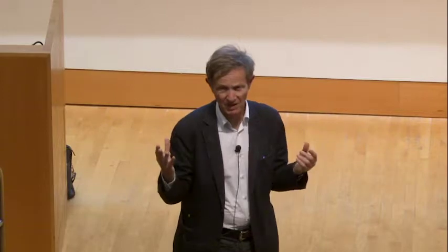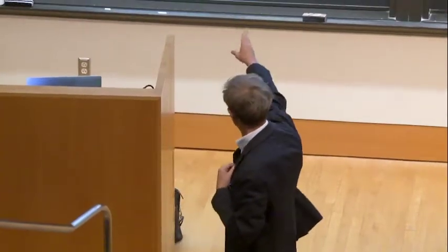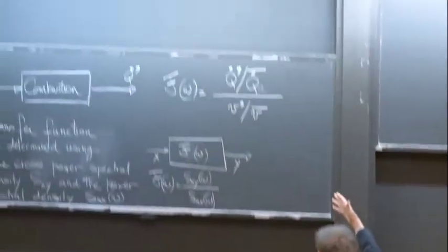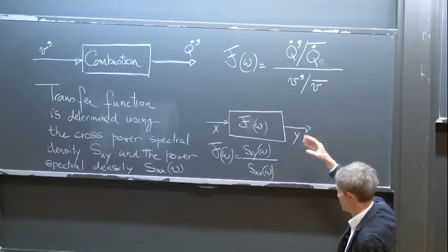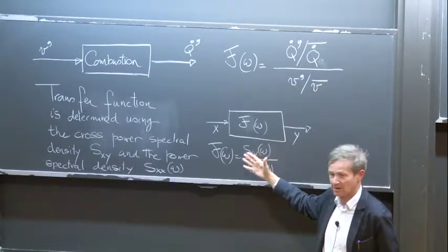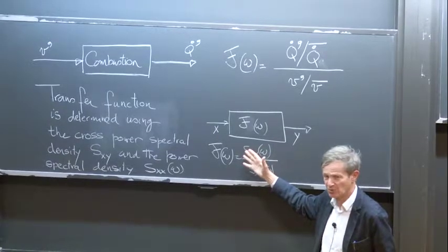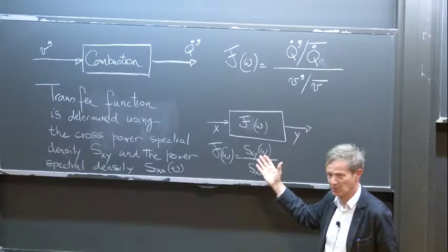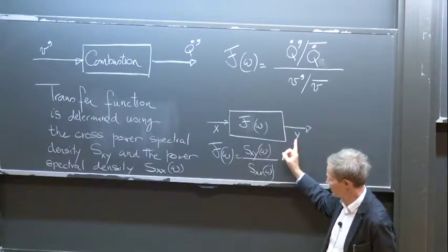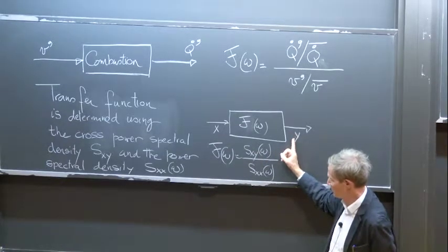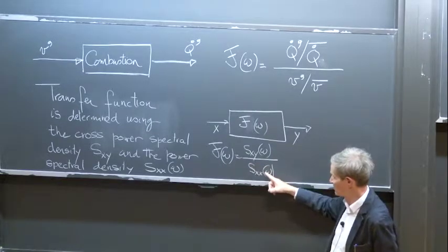The transfer function is obtained using these two quantities: on one side, the relative fluctuation in heat release, and on the other side, the relative fluctuation in velocity. This is the definition we've been using. And of course we have a transfer function also for the equivalence ratio fluctuation. In practice, the best technique to obtain this transfer function is to use a result from spectral analysis, which tells you that the transfer function is obtained by taking the cross-spectral density between input and output and dividing by the power spectral density of the input.